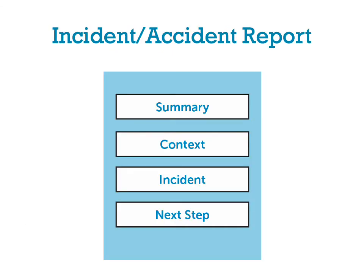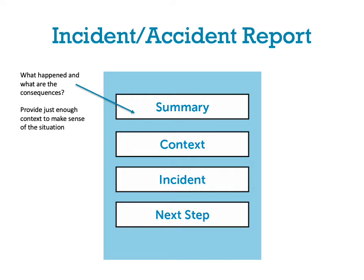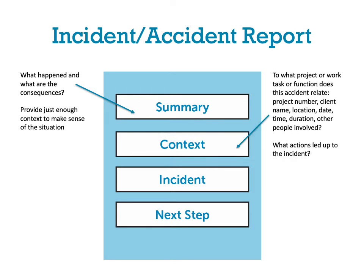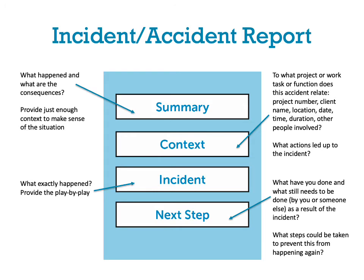Next, we have the incident or accident report. There are typically forms to fill out, but if not, here's a good rule of thumb. Your summary answers: what happened and what are the consequences? Provide just enough context to make sense of the situation — to what project or task does this incident relate? Include project number, client name, location, date, time, duration, and other people involved. Describe what actions led up to the incident, then the incident itself — provide the play-by-play. For the next step: what have you done, what still needs to be done by you or someone else, and what steps could be taken to prevent this from happening again?